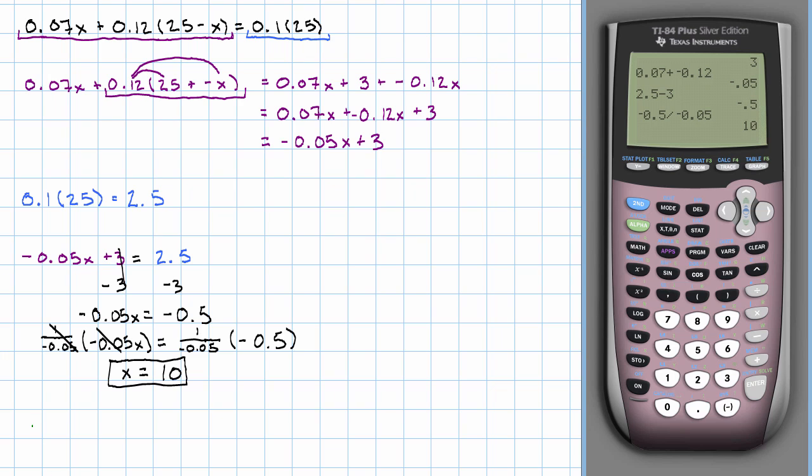Let's take a minute and check that. We've got 0.07 times 10 plus 0.12 times (25 minus 10). That's going to be 0.07 times 10 plus 0.12 times 15. And now I'm going to put that in the calculator.